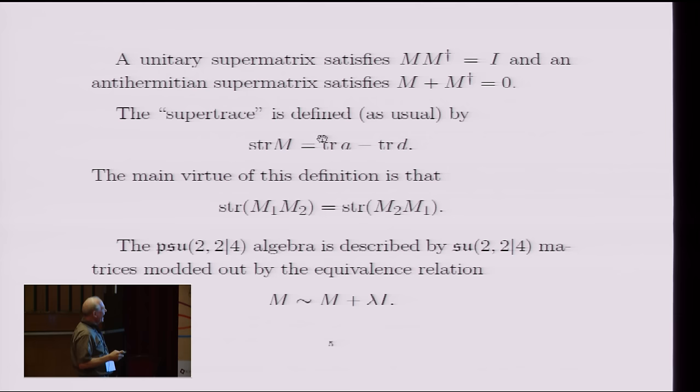So the PSU(2,2|4) algebra has one additional subtlety, which is very well known. It's convenient to start with the group which has an extra U(1) factor. So the P has to do with the removal of a U(1). The super algebra for SU(2,2|4) has generators with vanishing super trace. But the A and D blocks don't have vanishing trace themselves. They have equal traces.